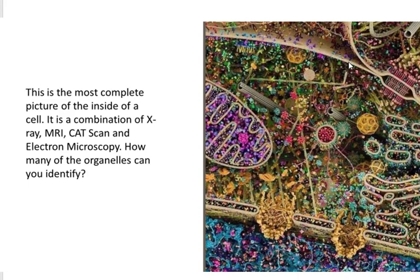Next we're going to talk about the cell surface. Here's the desmosome holding two cells together, and zooming in closer you can see this is a double layer of fat — a phospholipid bilayer. It's not just lipid; there's phosphate attached to it, and it's a bilayer meaning two layers. We'll find out why the phosphate is important.